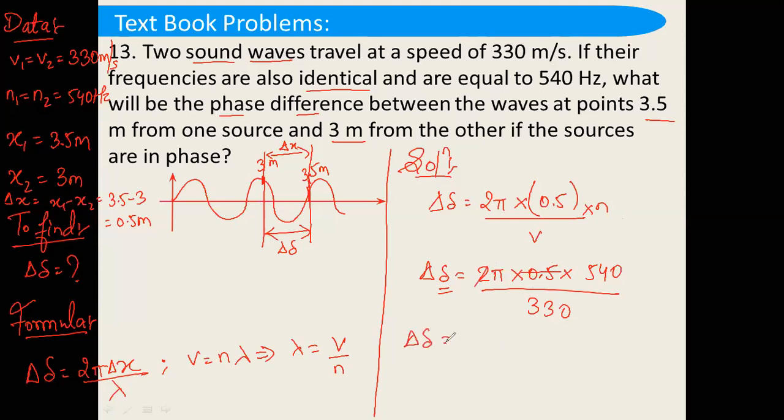Delta will be equal to 540 pi divided by 330. So, 0 will get cancelled. You can write this also. This is the answer. Pi divided by 33 radians.